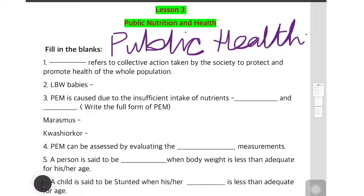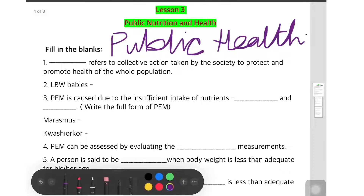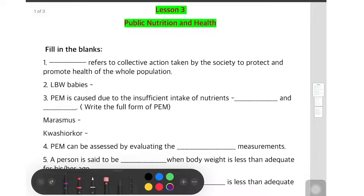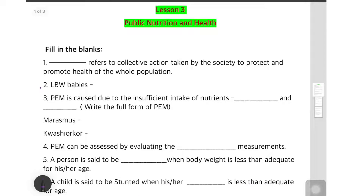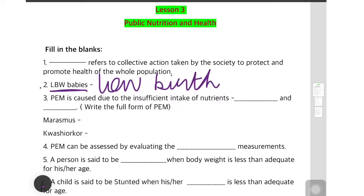If you were not able to answer, you should go and watch the video 2 of chapter 3 again — it will help you answer all the questions and clear your concepts. The second question: LBW babies — LBW means Low Birth Weight — babies which weigh less than 2.5 kg or 2500 grams.